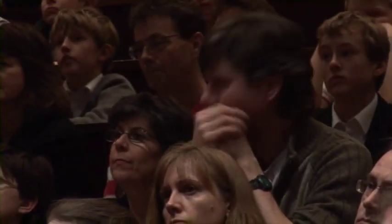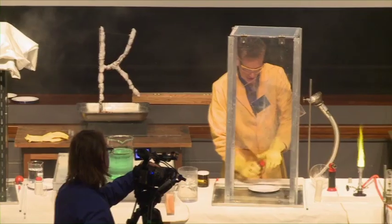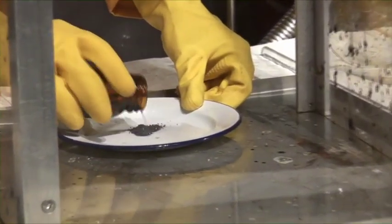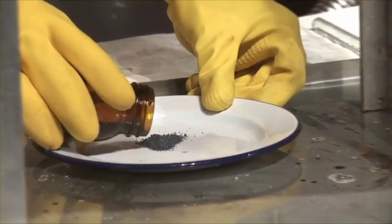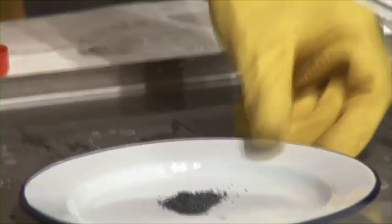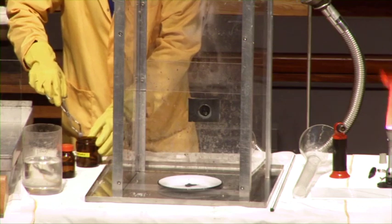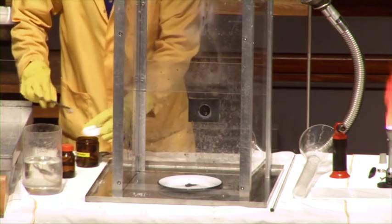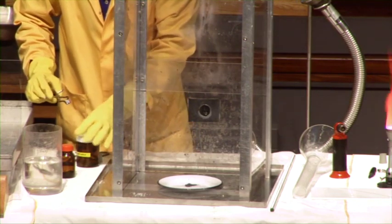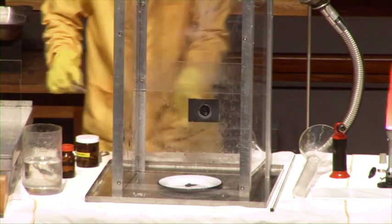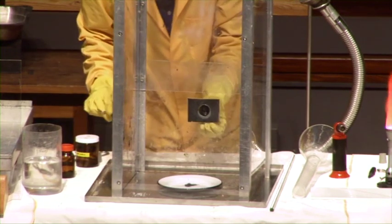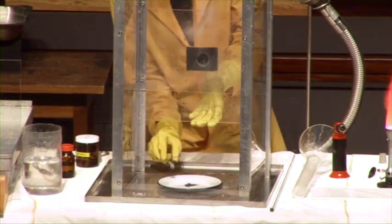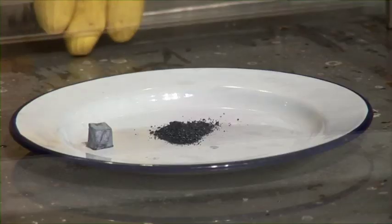So we have some iodine here — this is solid iodine. There it is on the tray. And here is our chunk of potassium.